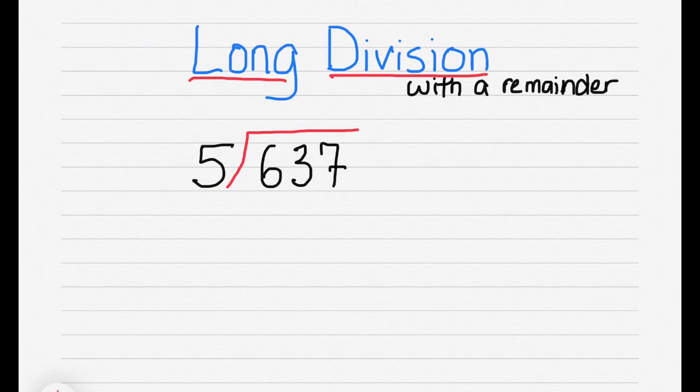Sometimes division is going to leave a remainder. So let's look at this problem. 5 into 637. 5 goes into 6 one time. We multiply 5 times 1. We get 5. We subtract that from our 6, which is 1. We bring down our 3.